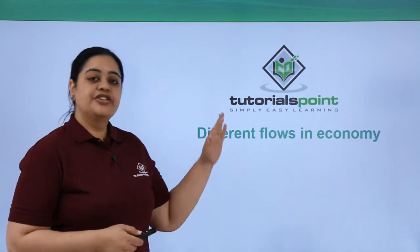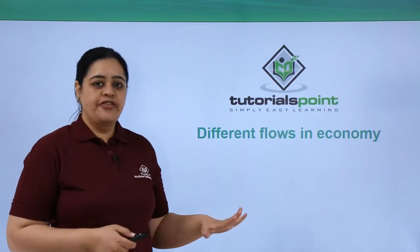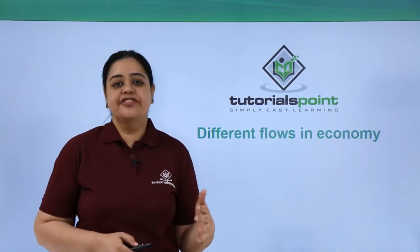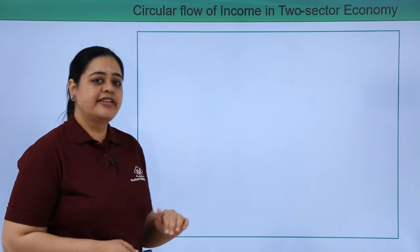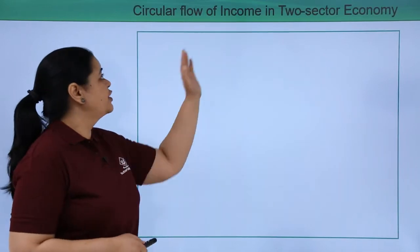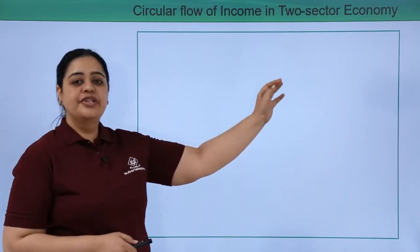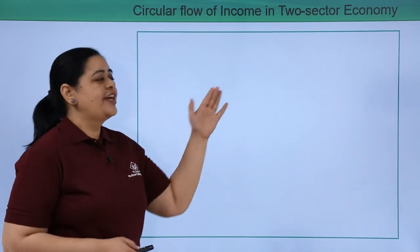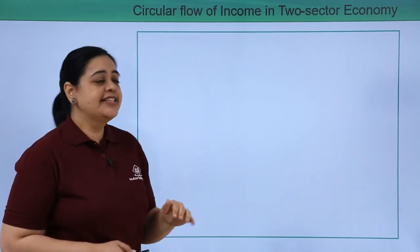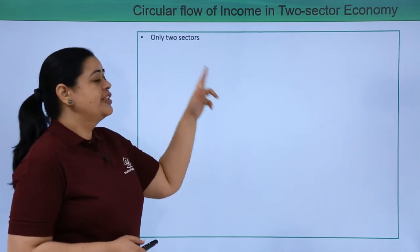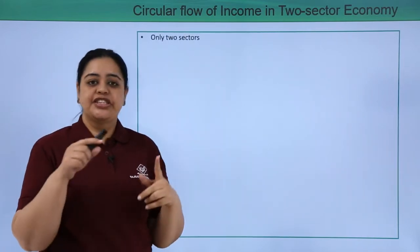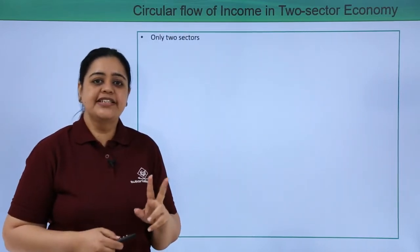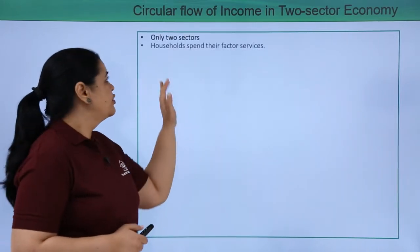We understood the circular flow of income, so let's now understand the different flows in the economy. The first one we are going to do is a two-sector economy. As the name suggests, there would be only two sectors: households and business firms.